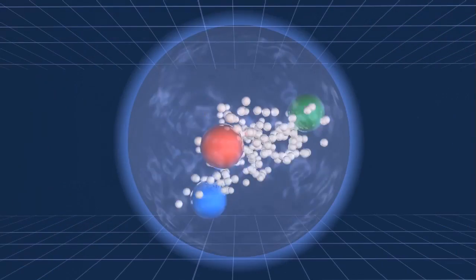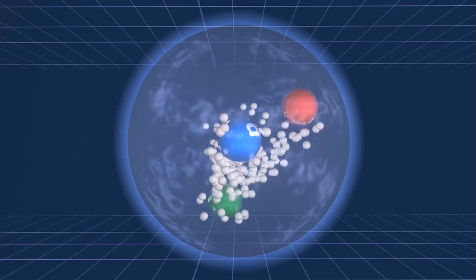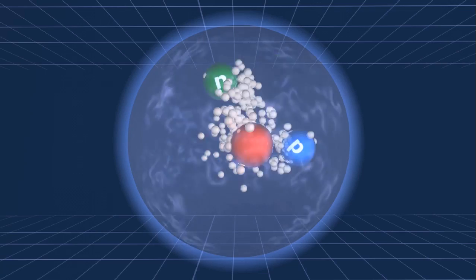Let's zoom in on one of the protons. It is composed of three quarks, two up quarks and one down quark, moving around very close to each other.